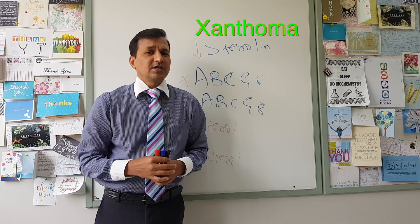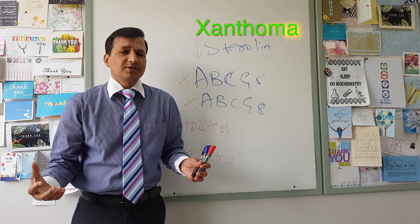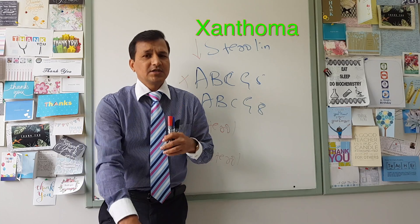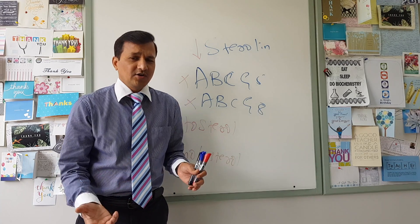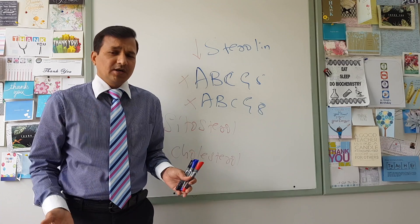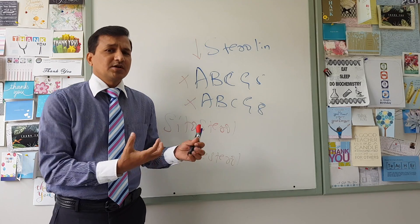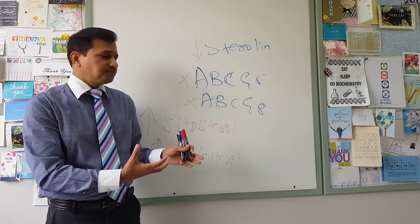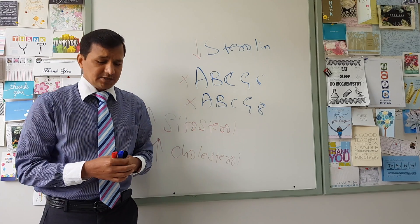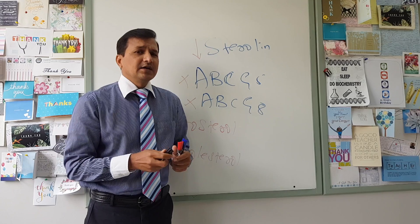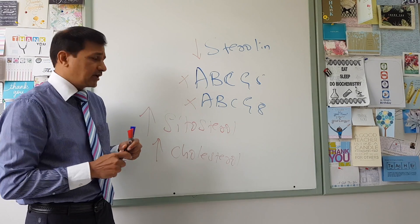Patients with sitosterolemia can show cutaneous xanthomas. These xanthomas can be seen on the elbows, on the knees, in the Achilles tendon, or on the buttocks. So patients show cutaneous xanthomas and tendon xanthomas, as well as accelerated atherosclerosis.